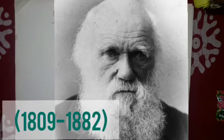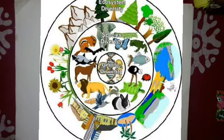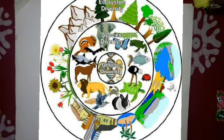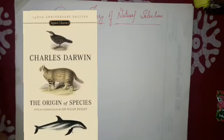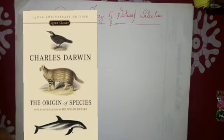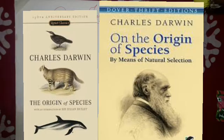He once upon a time went for a trip and saw various beautiful plants and animals around him. After going through the trip, or you can say after observing such beauty of nature, he published a book named 'Origin of Species.' This book was highly popular and about one thousand two hundred and fifty copies were sold in a single day.